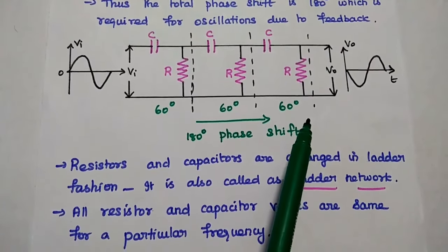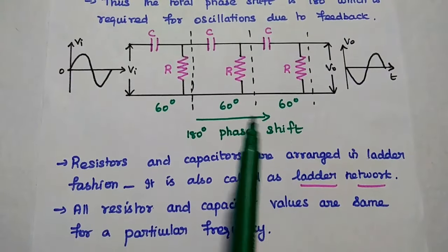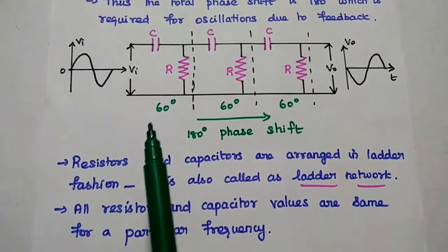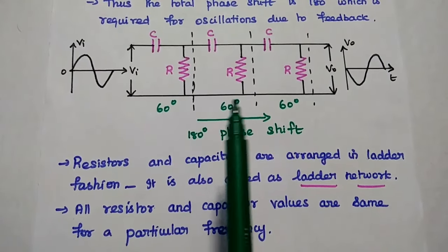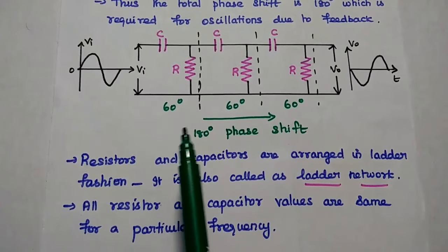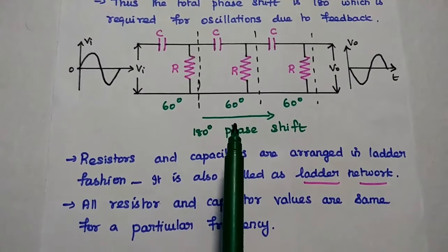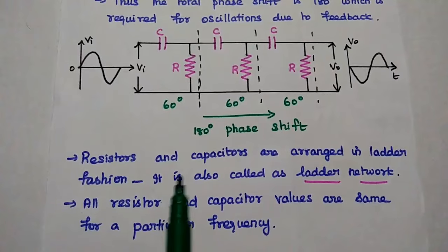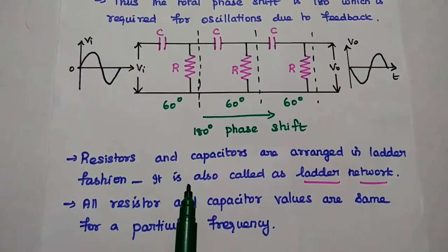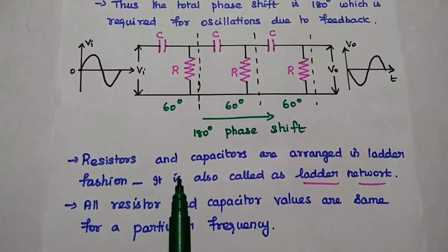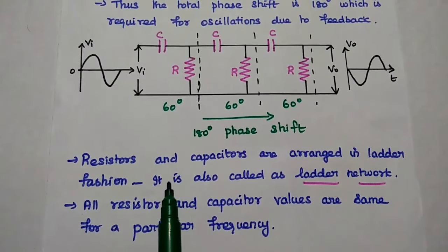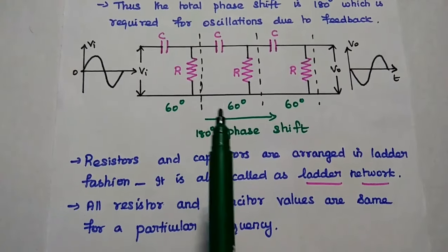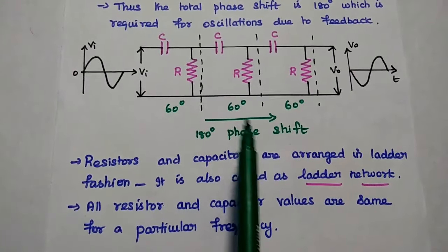Here the resistors and capacitors are arranged in ladder fashion, so it is also called a ladder feedback network. Here all the resistor and capacitor values are the same for a particular frequency. If we want to change the frequency, we have to change the resistor and capacitor values simultaneously in all the sections.